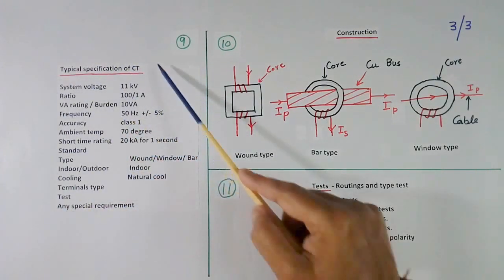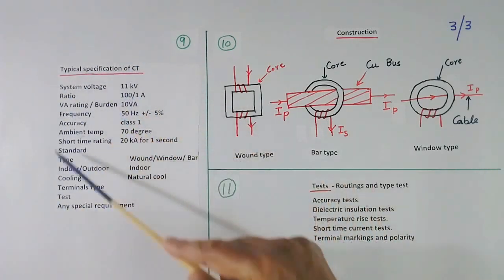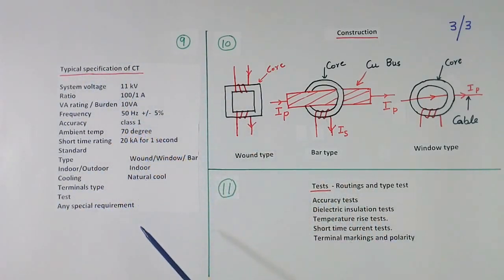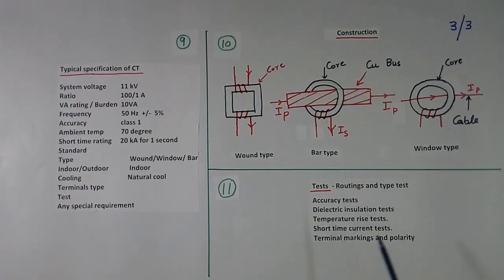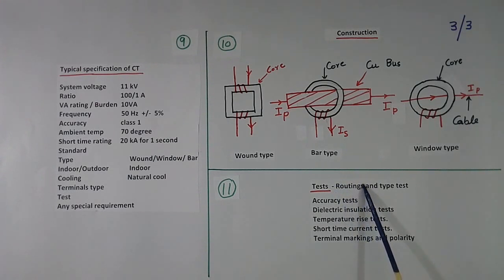Here I have shown this much. But in industry, specification will run in many pages. Now we come to test. Routine and type. Suppose we buy 100 CT. Then routine test are those which are done in all 100 CT. And type test are those which are done only in 1 or 2 CT.